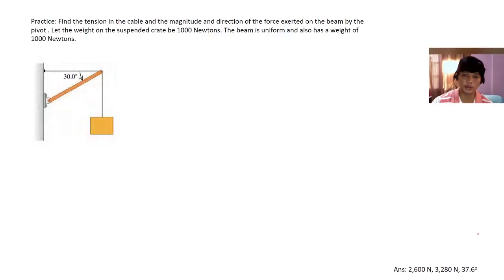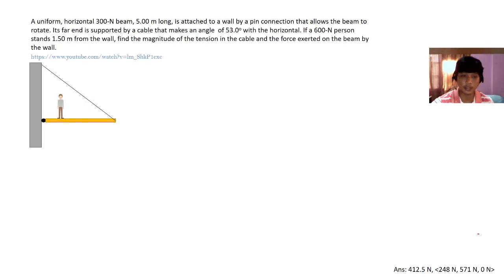It's problem number three. A uniform horizontal 300N beam, 5 meters long, is attached to a wall by a pin connection that allows the beam to rotate. Its far end is supported by a cable that makes an angle of 53 degrees with horizontal. If a 600N person stands 1.5 meters from the wall, find the magnitude of the tension in the cable and the force exerted on the beam by the wall.